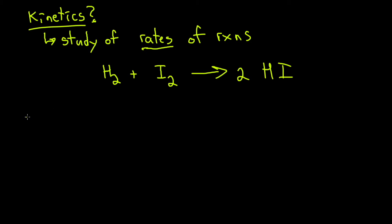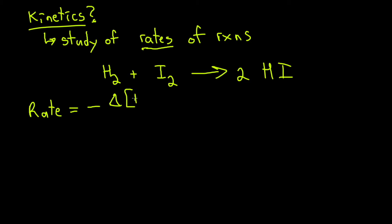Let's first start with the reactant. If we are looking for the rate of the entire reaction, we would have a negative. If we're talking about a reactant, it must be expressed as negative because our concentration will be decreasing. So here's the formula: negative delta concentration of H₂ over delta T.